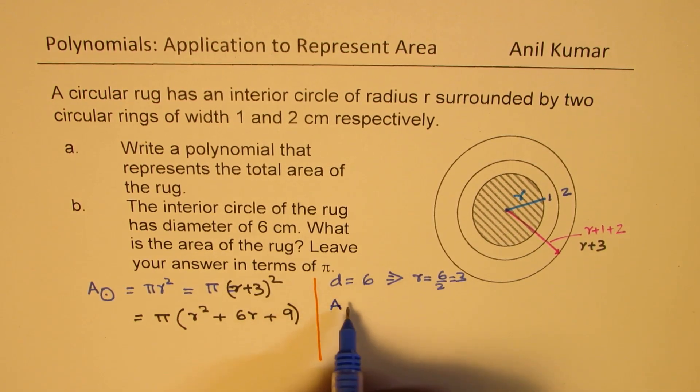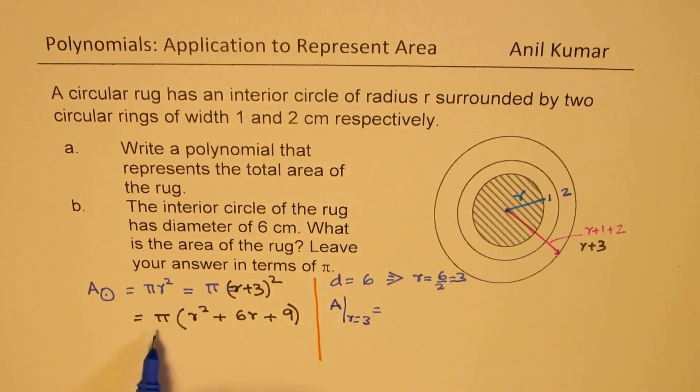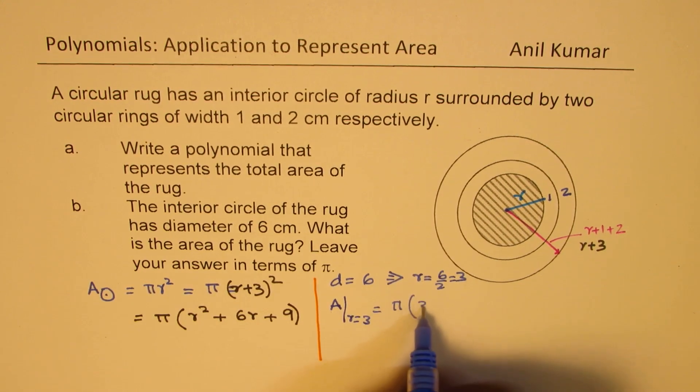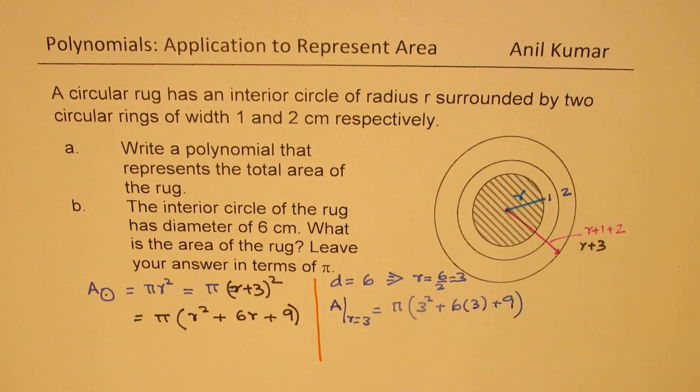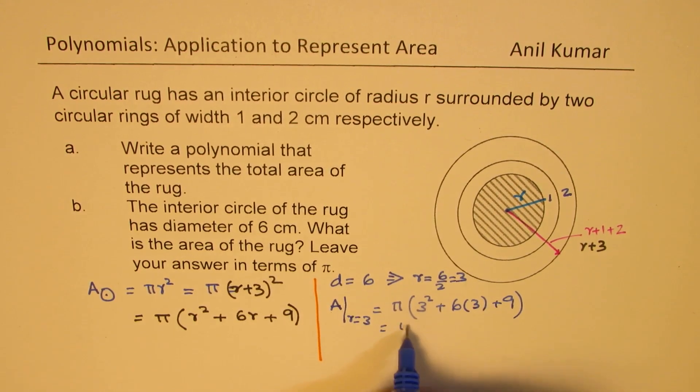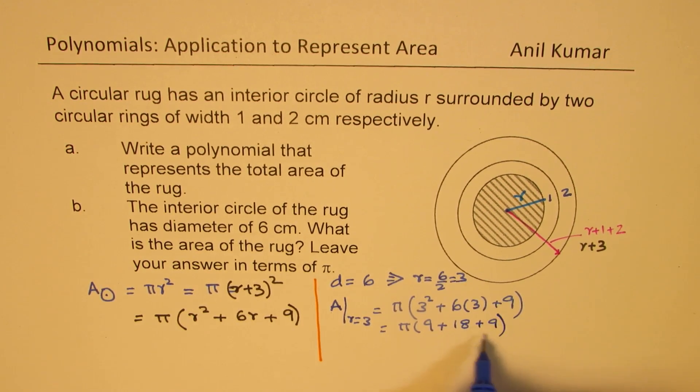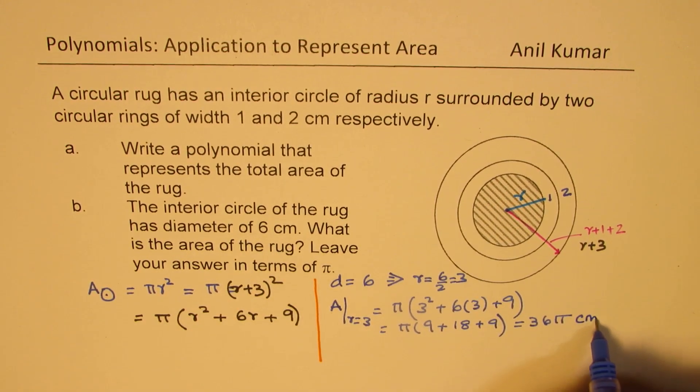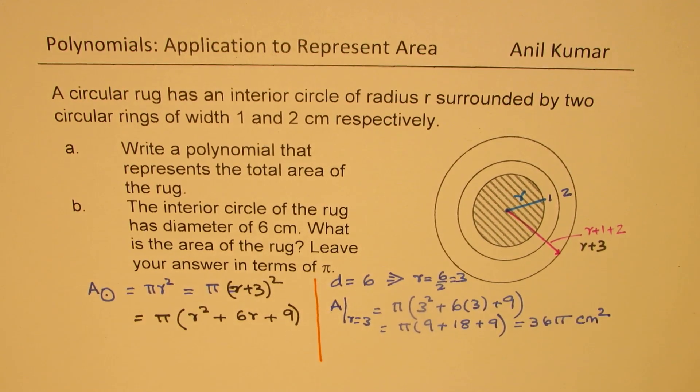So circle area for radius equals 3 will be how much? We'll substitute 3 here in terms of π. We'll get 3² plus 6 times 3 plus 9. So that gives us π times 9 plus 6 times 3 is 18 plus 9. So 18 plus 18 is 36π centimeters square. So that becomes the area when the diameter of the interior circle is given.